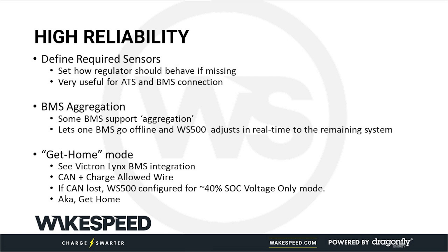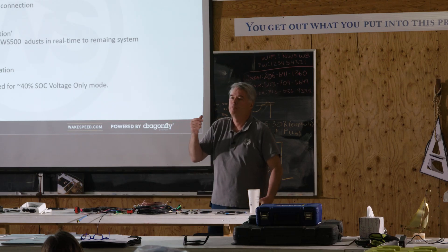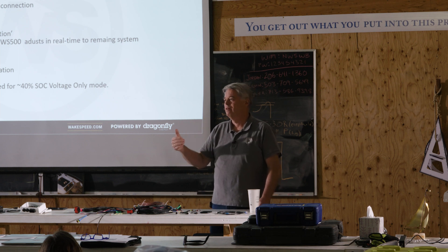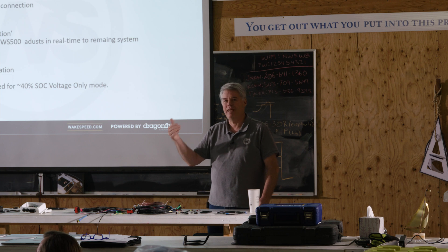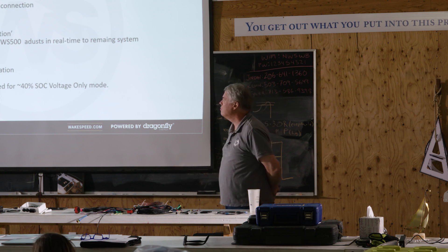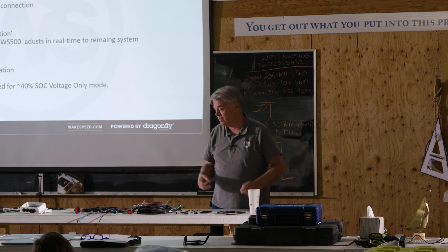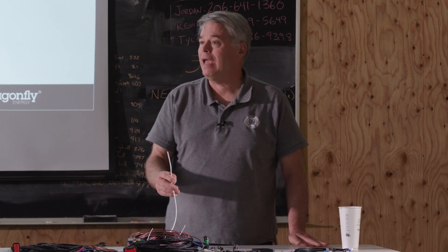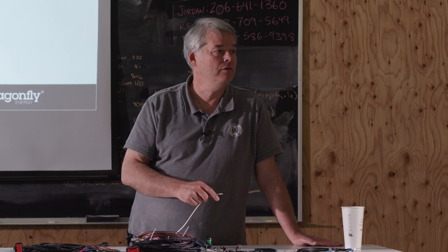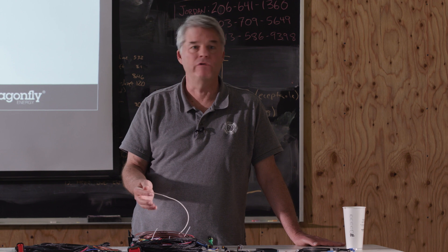Get home mode is another interesting advanced high-reliability feature, and it's kind of a two-edged sword. When you put these advanced features in and operators are running and they enable without understanding what happened, they're going to say 'What's wrong? Why is this thing not working?' We have get home mode defined for the Victron Lynx BMS, and you could do other BMSs as well. The question is: if we depend on the CAN-connected BMS for our information, what do you want to have happen if that BMS goes away and we lose that connection?